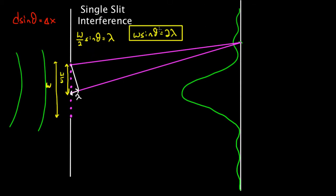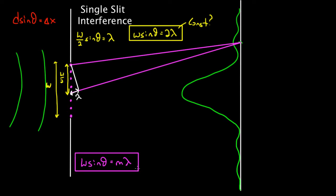Now I'm already confused. W sine theta equals two lambda — constructive? We already proved this is a destructive point! Our relationship for the destructive points was W sine theta equals m lambda, for m = 1, 2, 3, 4, 5 — these give destructive for any non-zero integer. It looks like we've just proved these are constructive. How are these constructive? Well, they're not really. They kind of are, but watch what happens.